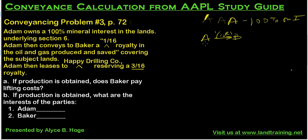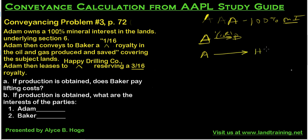This creates a royalty estate — A is not conveying a mineral interest, he is only conveying a royalty estate, so B does not then own 100% of the minerals. If you were going to take the lease at this point, you're going to take the lease from A because A is the mineral interest owner. So A is then going to lease to Happy Drilling Company with that same 3/16th royalty.